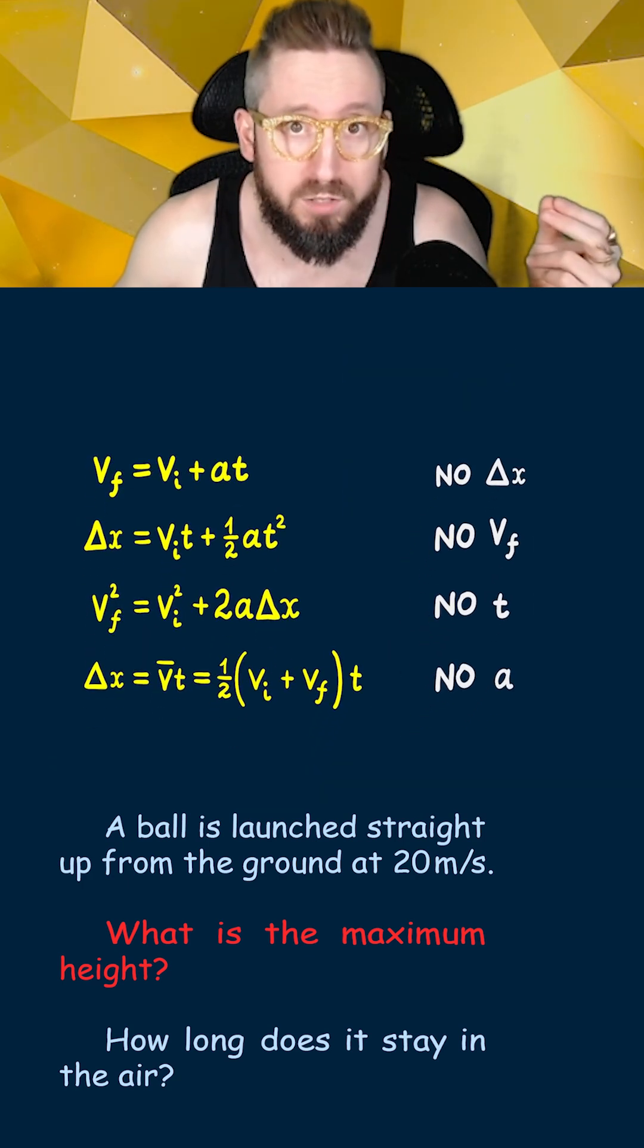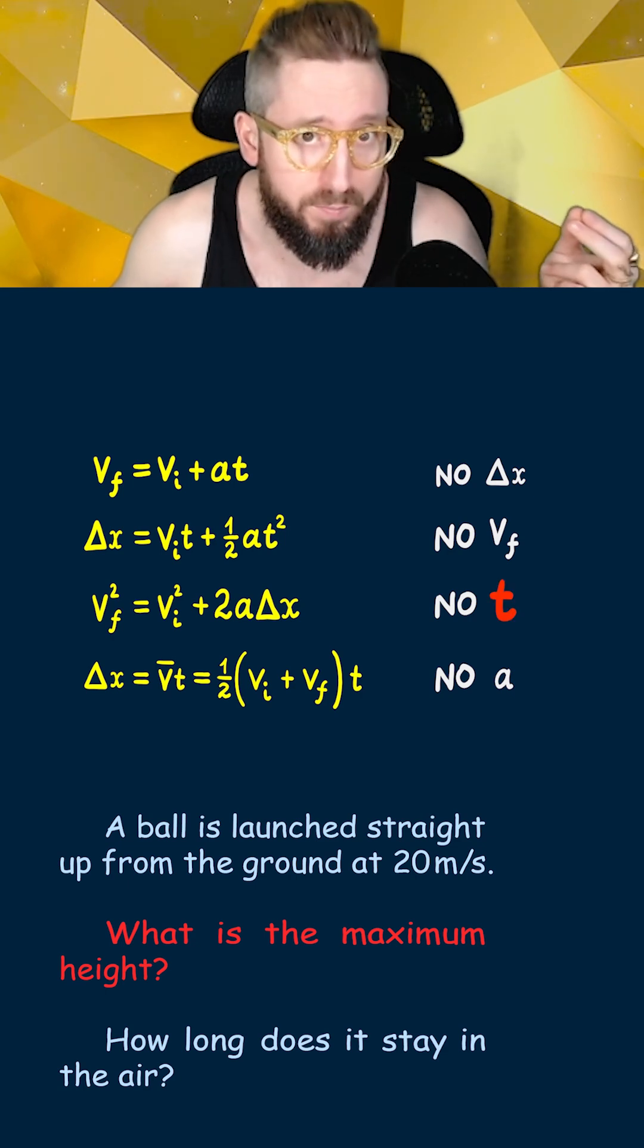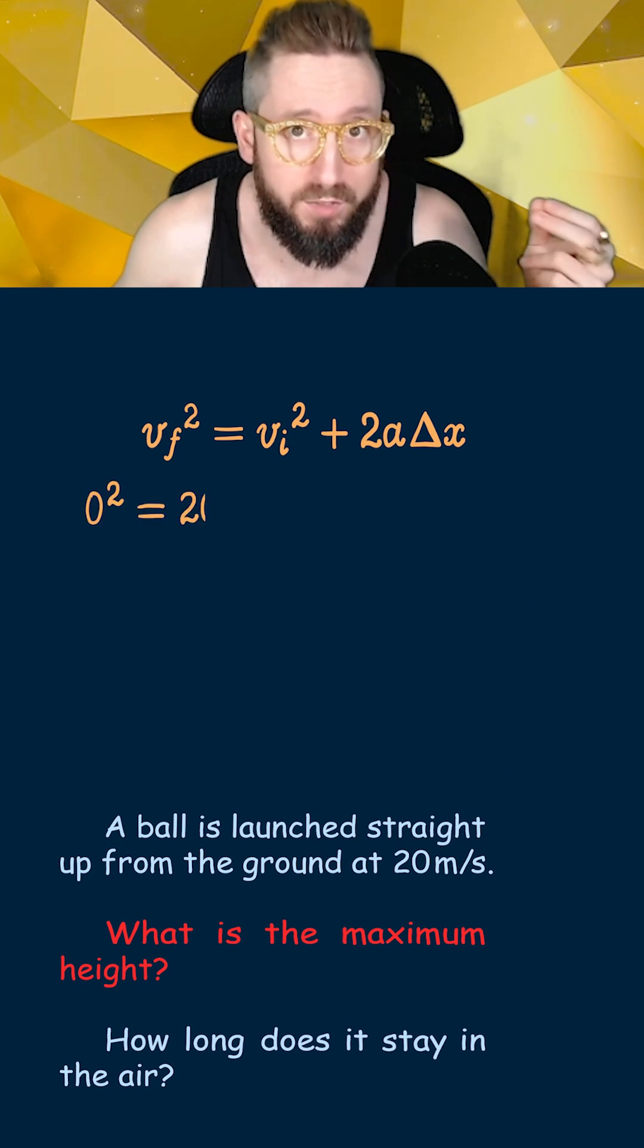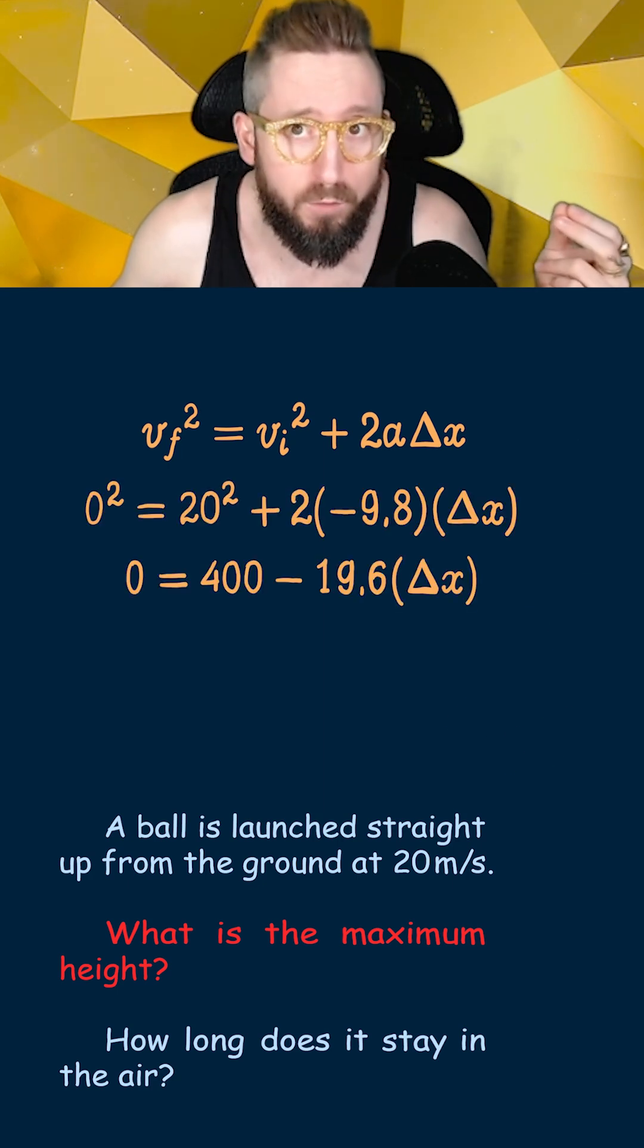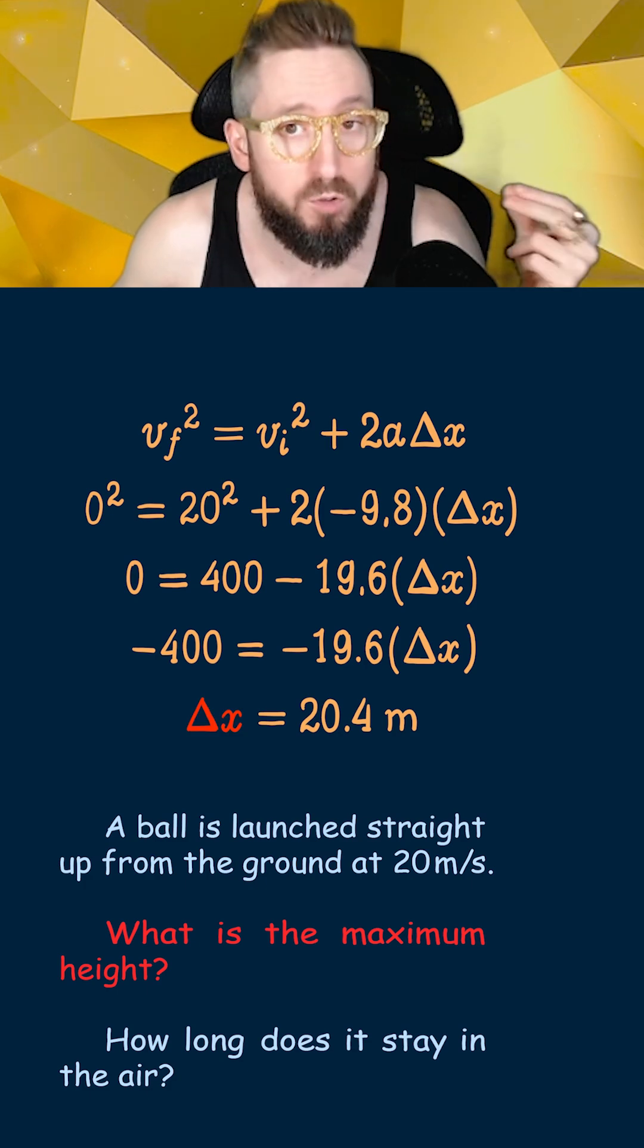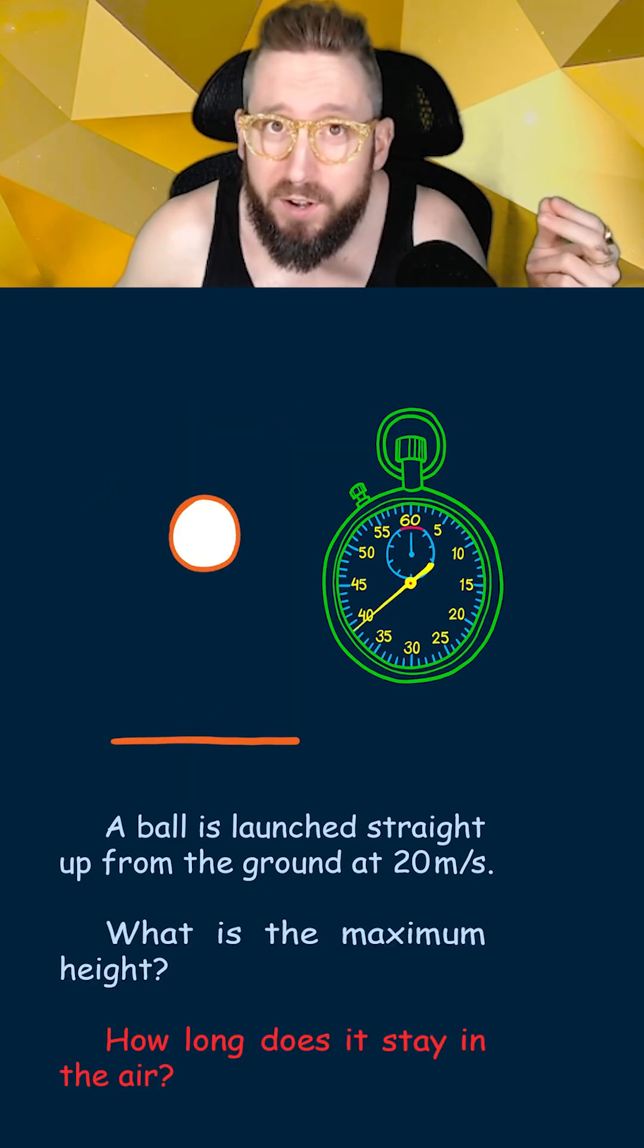For the first part of this question, to find maximum height, we're not given nor are we trying to find the time t. So we're going to use this third equation to solve our problem. All that's left to do is to plug in the numbers, do a little algebra to solve for the unknown change in position, and you'll find that the ball reaches a maximum height of 20.4 meters.